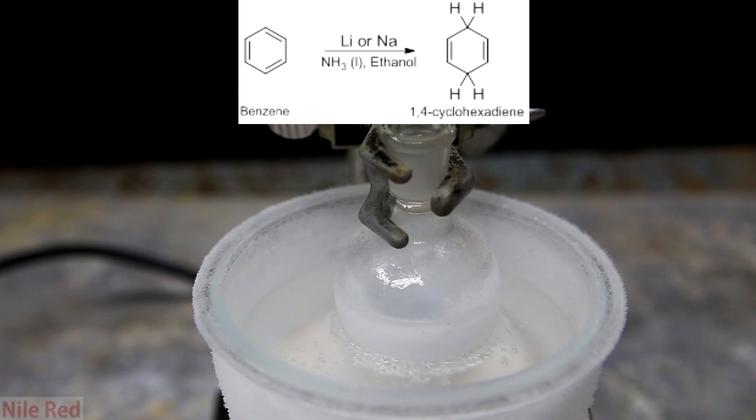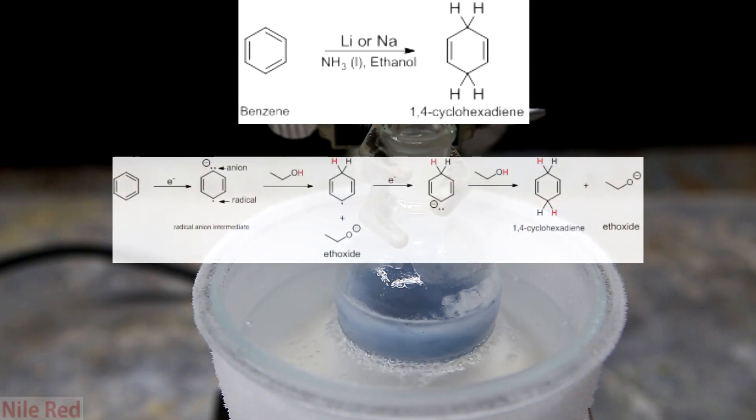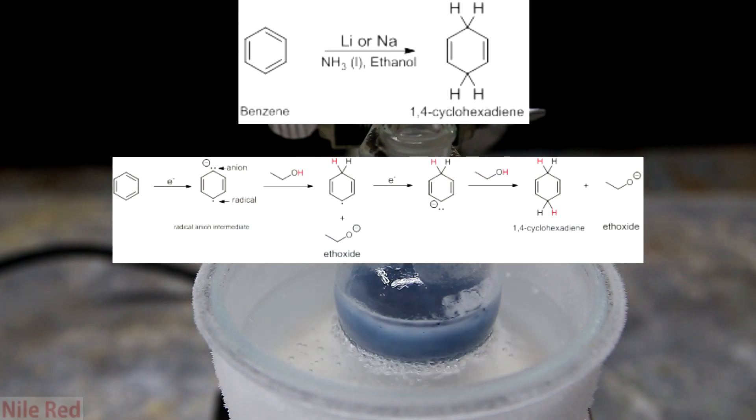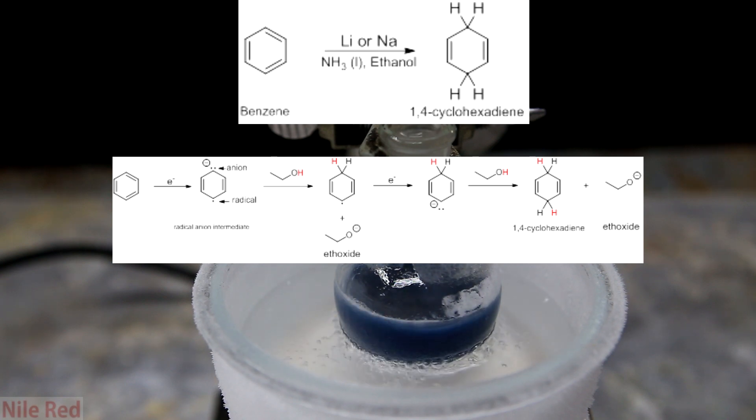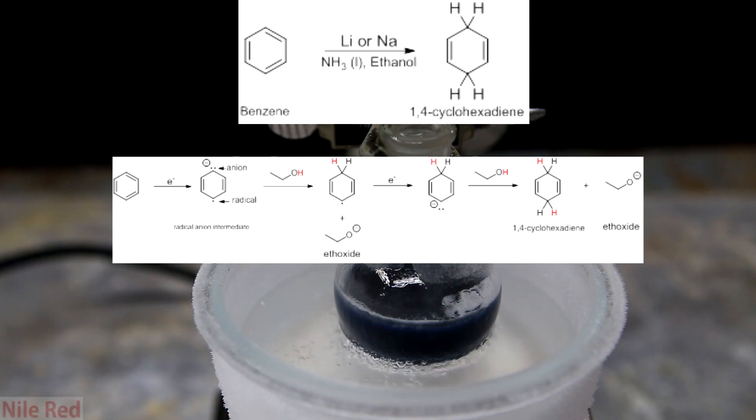So what happens first is the lithium dissolves into the ammonia and provides free electrons for the reaction. When it picks up its first electron it forms an intermediate called the radical anion intermediate.